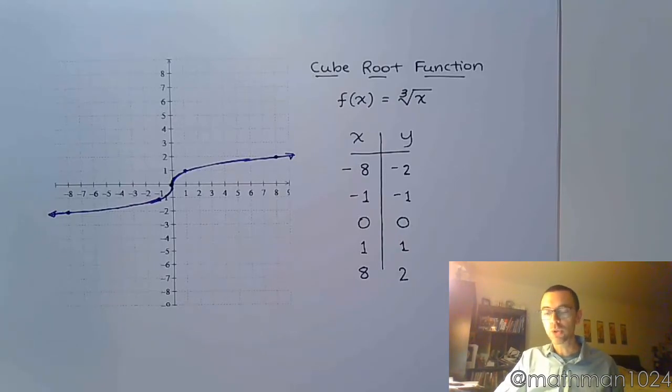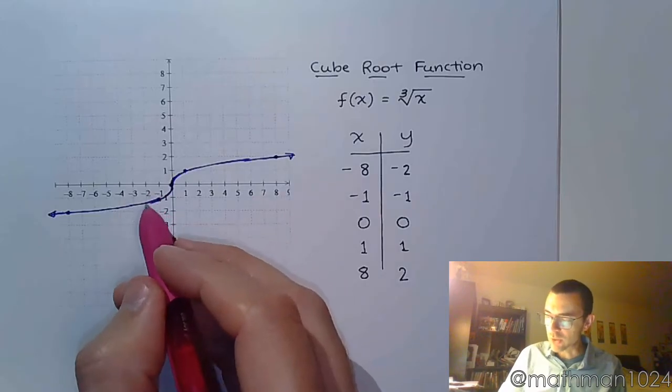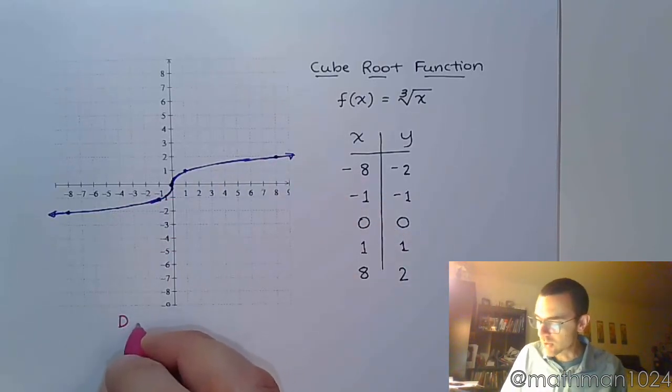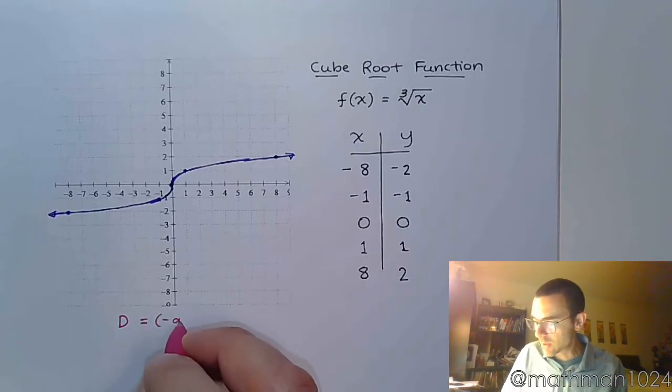Now let's talk about your domain. As you see here from the picture, this guy goes all the way left, all the way right, so his domain doesn't have restrictions like what we saw for the square root function. So this is going to be all real numbers.